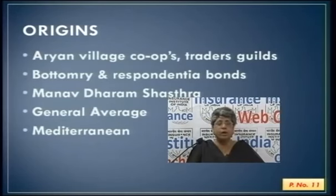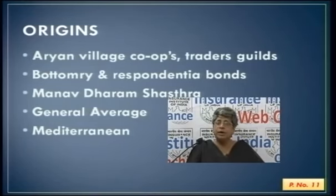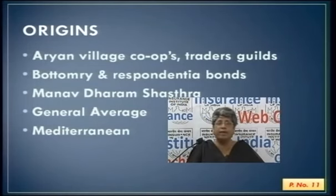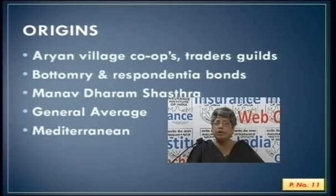In the Manu Shastra — the Manav Dharma Shastra — we find a concept of loans and insurance was in place, and that practice continued in India on the basis of the Shastra. General average is also related to ships. During a voyage, if there was a heavy storm, some cargo might have to be thrown overboard to save the ship. The owner of that cargo would bear the loss, but the captain would arrange for all the other cargo owners who reached safely to compensate him — that is the concept of general average, which you will come across regularly in marine insurance.